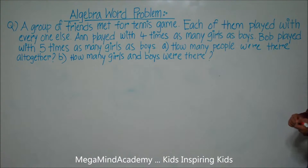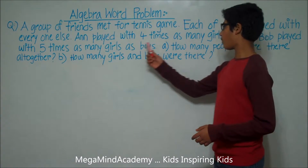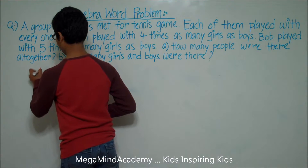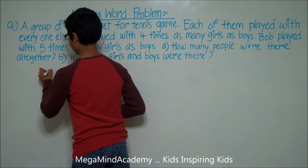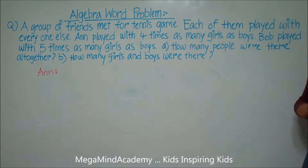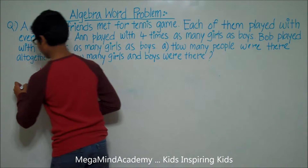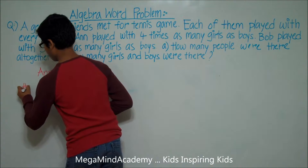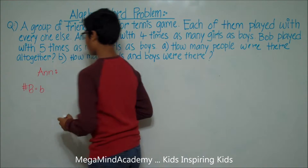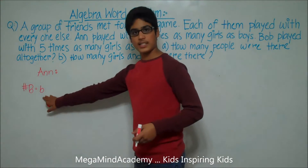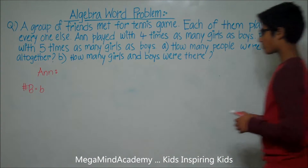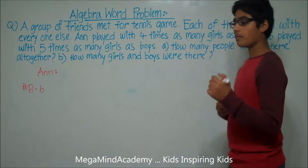The problem states that Ann played with four times as many girls as boys. Let's label this column 'Ann.' Let's say that the number of boys is equal to B. So the number of boys is equal to B. And she played with four times as many girls as boys.